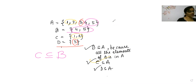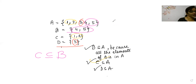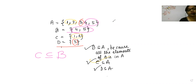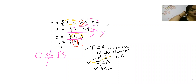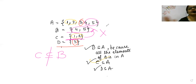Saranya, Anila, and Bhoomika are saying no — correct, because the elements of C are not present in B. Because of that, C is not a subset of B. So it is exactly not possible.